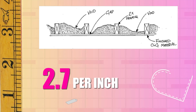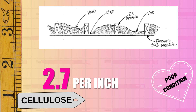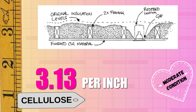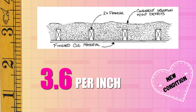If you find loose fill cellulose insulation in your attic and it is in poor condition, you can assign it an R-value of 2.7 per inch. Moderate condition is 3.13 R-value per inch. New cellulose is calculated at 3.6 R-value per inch.